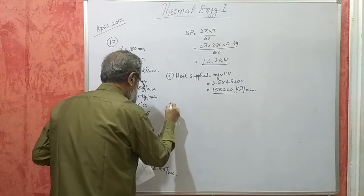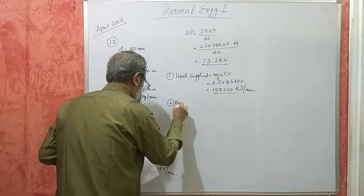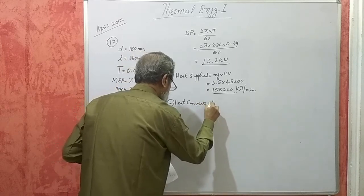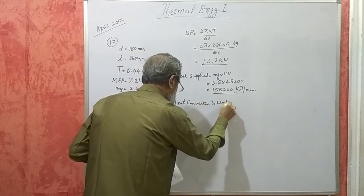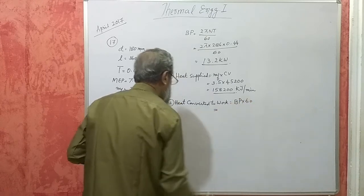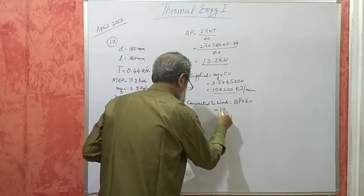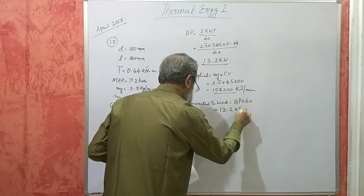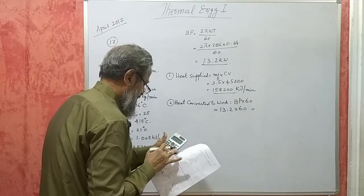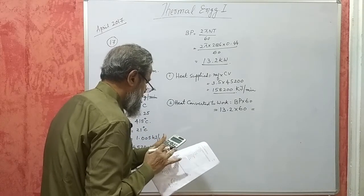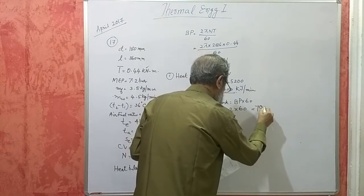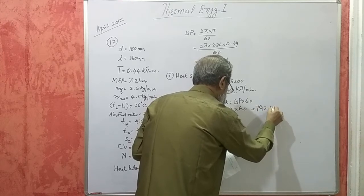Heat converted to work, useful work, is BP into 60. That is BP is 13.2 into 60. That is 792 kilojoules per minute.